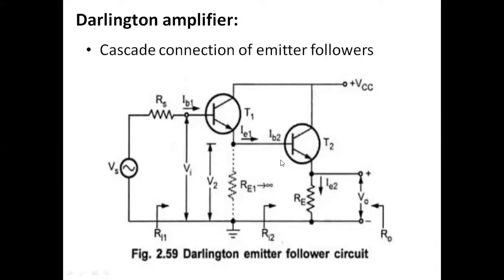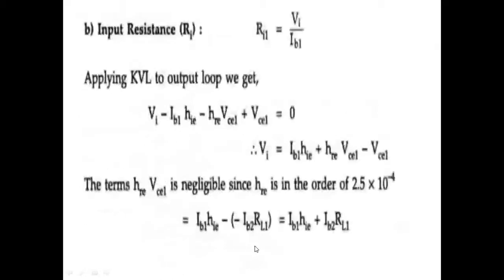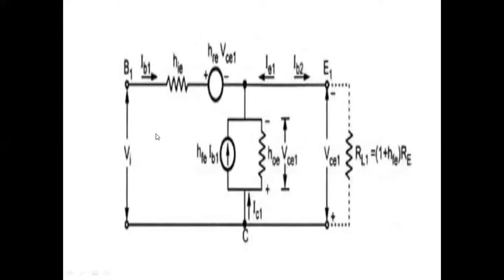We already found the values RI2 as well as AI2. Similarly we are finding AI1 as well as RI1. AI1 is the current gain of first stage, that is 1 plus hFE into 1 plus hFE into RE. RI1 is the input resistance. Input resistance means the ratio of voltage and current represents the impedance - first stage input impedance is the input voltage of first stage divided by input current of first stage.